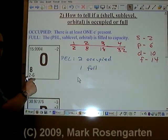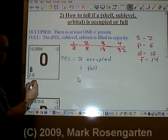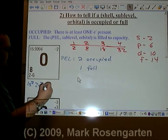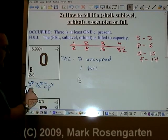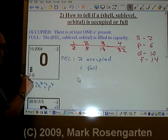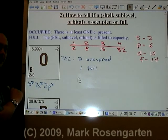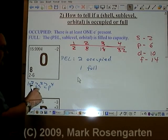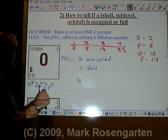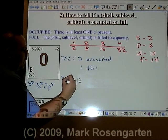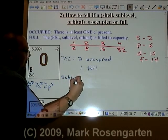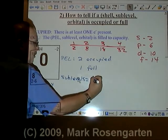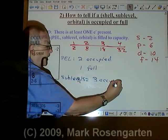What about sub-levels? When we break this down, it's 1s2, 2s2, 2p4 — that adds up to the eight electrons that we have. This sub-level, this sub-level, and this sub-level are occupied. So for sub-levels, we have three that are occupied.